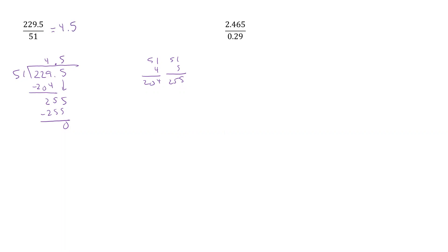As you've noticed, a lot of the time when I'm doing this, I try to figure out 5 times what will give me something close to this. I took 5 times 4 and got 20, which is close to 22. Then I went and did the subtraction. And then 5 times 5 was 25. It's all just a matter of practicing and multiplying.